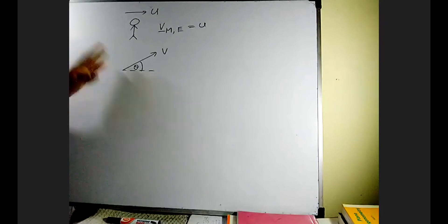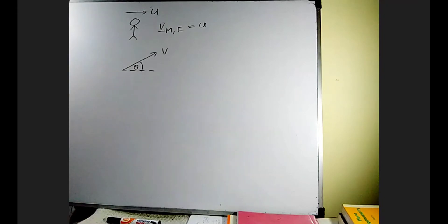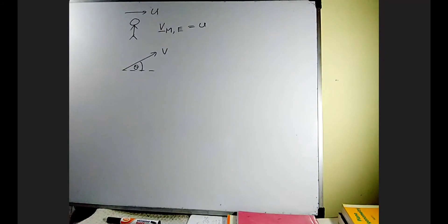This angle information can be given in a question like this: wind is blowing at a velocity v, theta inclined to the horizontal. Sometimes it can be given as velocity of the wind v, theta north of east.